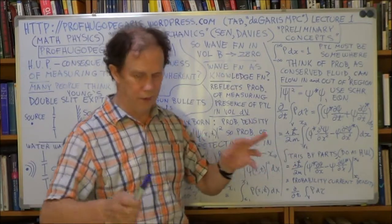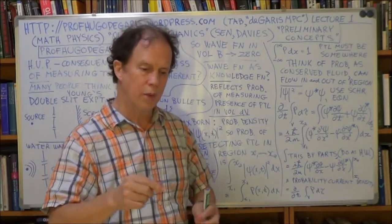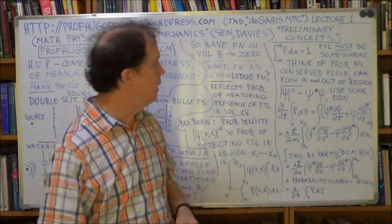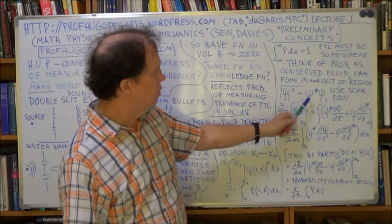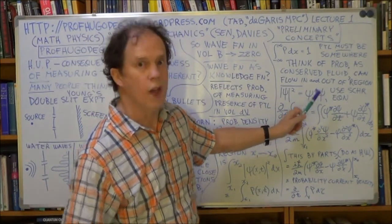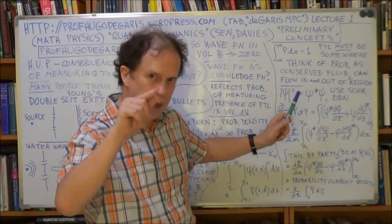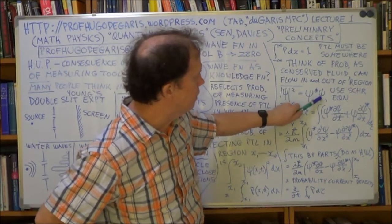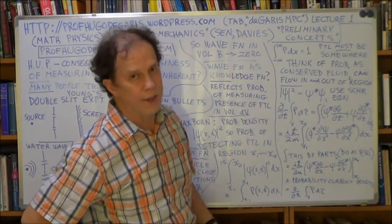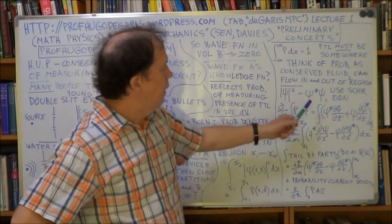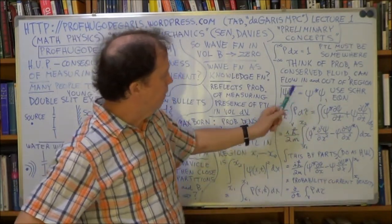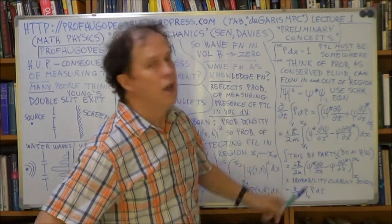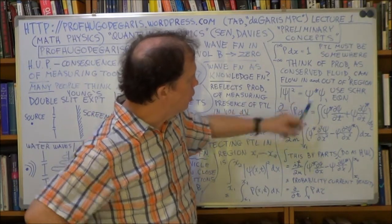Now, the way he solved the problem that the wave function, when you solve Schrödinger's equation, will involve complex numbers. So he said, you take a solution to your Schrödinger equation, psi, and you multiply it by itself, but conjugate it.